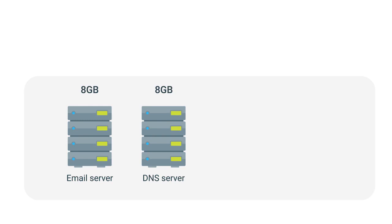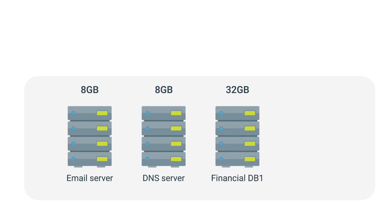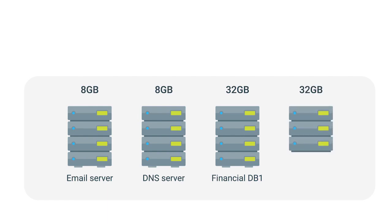But you can't run the name server on the same physical machine as your email server, since your email server needs to run on Windows and your name server needs to run on Linux. And the smallest server configuration your hardware vendor sells is a machine with 8 gigabytes of RAM. You also have a financial database that is normally pretty quiet but for your end-of-month billing processes needs 32 gigabytes of RAM. So you order a server with that much RAM and then a second as a backup. In order to run your business this way, you have to purchase four machines with a grand total of 80 gigabytes of RAM — outrageous since only about 40 gigabytes will ever be used at one time.